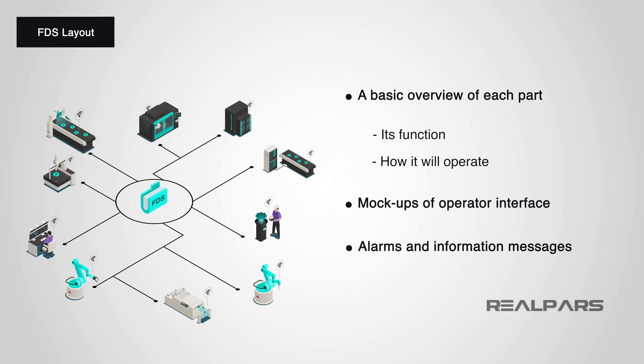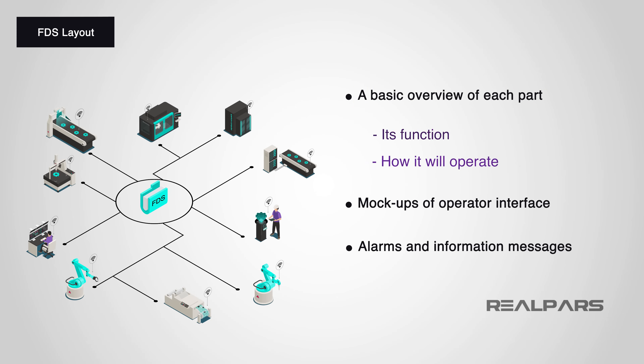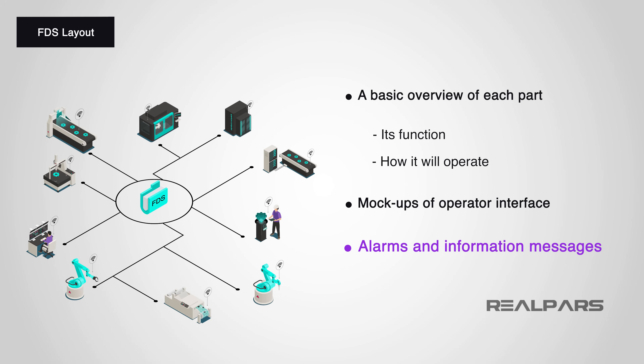A Functional Design Specification can have many types of layouts, but will typically contain a basic overview of each main part of the system, its function, and how it will operate. Depending on the system being discussed, a Functional Design Specification may contain mock-ups of operator interface screens and show the operation of each button and part of the screen. The cause and effect of alarms and information messages on the system will also be discussed, as will safety devices and their effects on the system.